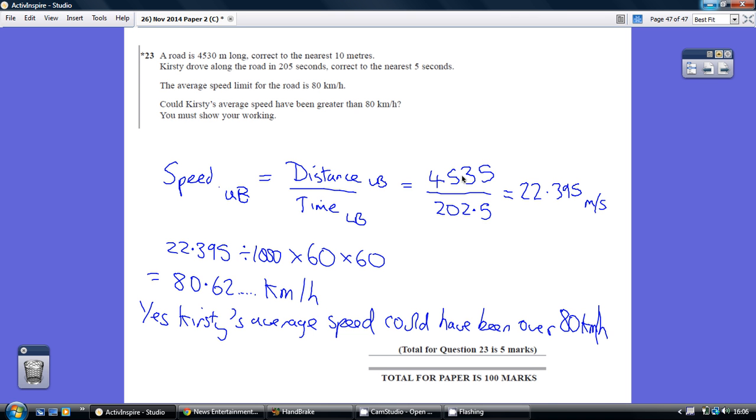Getting our calculator out, 4535 divided by 202.5 gives us 22.395 metres per second. Now we're trying to work it out in kilometres per hour, so we have to convert this 22.395 into kilometres per hour.